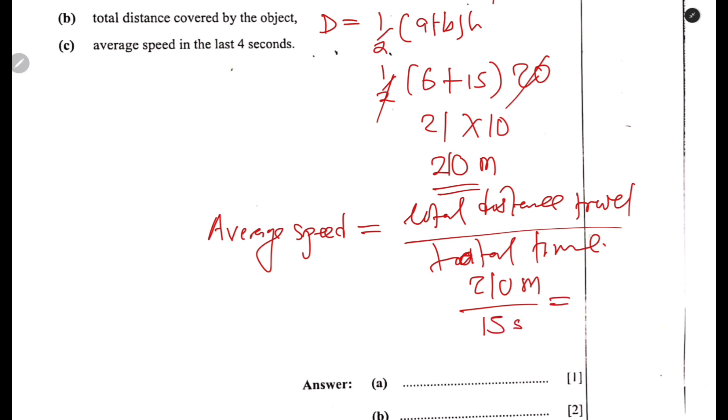Now, you don't use a calculator, so you find a way of reducing. 3 into 15 is 5, and 3 into 21 is 7, so that's 70. Then 5 into 5 is 1, and 5 into 70 gives us 14, divided by 1, which is just 14 meters per second. That's how you can simplify it.